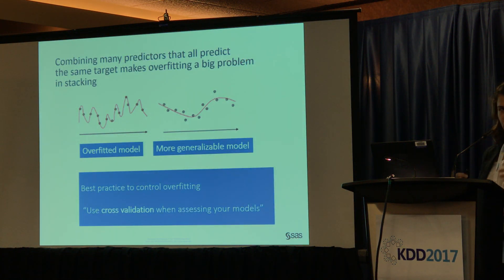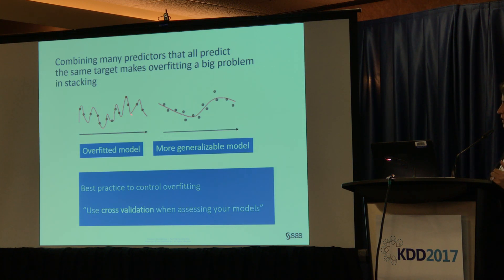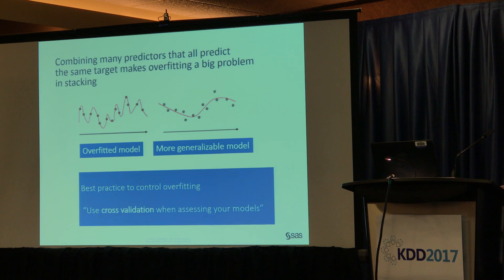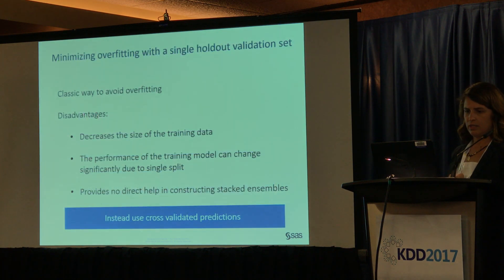In an overfitting model, if you fit an overfit model to data it will capture noise and won't generalize well to a new dataset. We want a smoother curve. A best practice to control overfitting is to assess your models using cross-validation. The classical way to minimize overfitting is to use a single validation set — it is a reliable method to assess models, and has been the main technique in SAS Enterprise Miner since its inception.